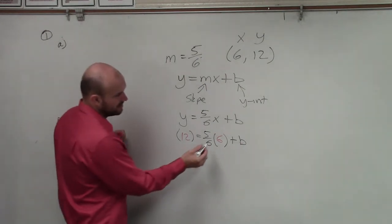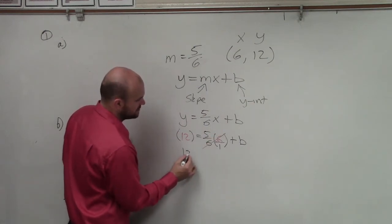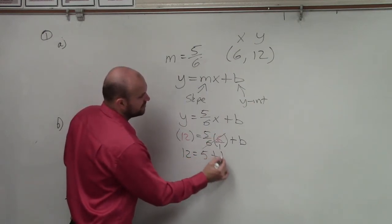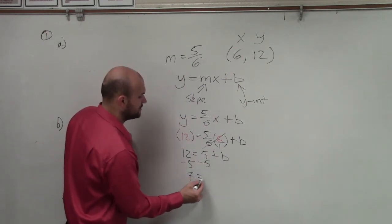So when I look at this, I have 6 over 1. The 6's divide out, and I'm left with 12 equals 5 plus b. Subtract 5, subtract 5. I get 7 equals b.